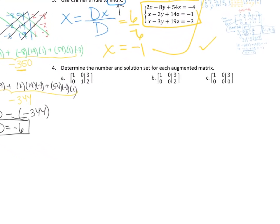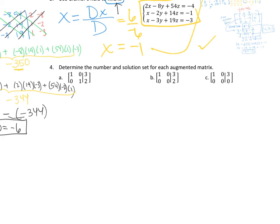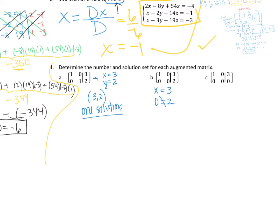For the next few problems, we're given augmented matrices that have already been row-reduced and we need to identify the solution type. For part A, rewriting: x equals 3 and y equals 2. Nothing weird — there's one solution. For part B, rewriting gives x equals 3 and 0 equals 2, which is false — so there are no solutions. The solution set is the empty set.